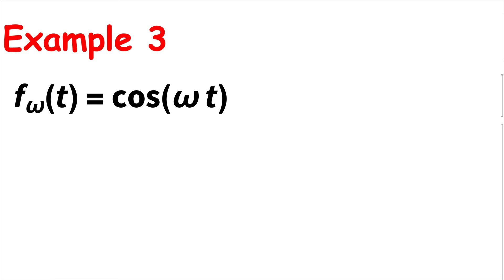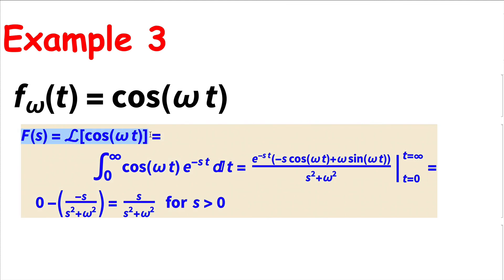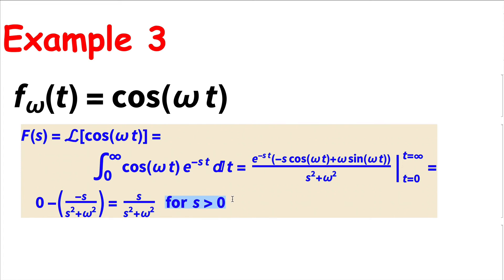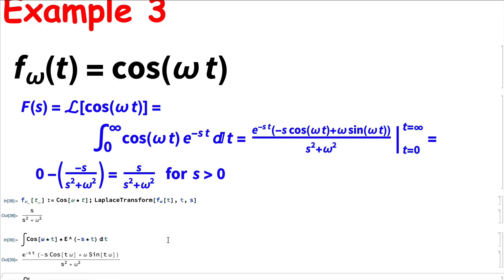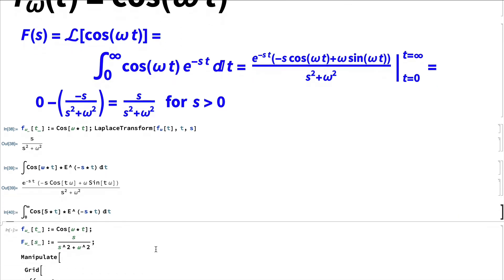The most interesting example involves a family of cosine functions: f_ω(t) = cos(ωt). Computing the Laplace transform by hand requires integration by parts twice. The antiderivative is obtained, and since s is positive it goes to zero as t → ∞, giving a final answer of s/(s² + ω²) for positive s. Something new is happening here: this is no longer a decreasing function of s — it will increase at first before it decreases.